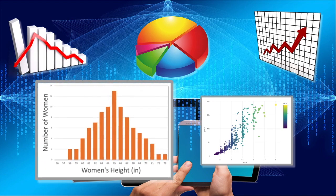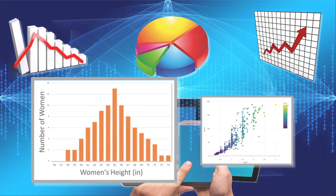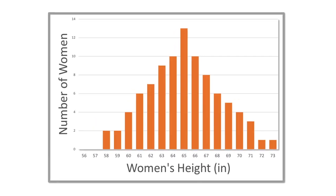Now the histogram is especially helpful when we want to see how data is distributed or spread out. For example, this one shows the different heights in a group of women. It looks like most women in this group are about 65 inches tall. You can tell just by glancing at it because it's the biggest bar on the graph.